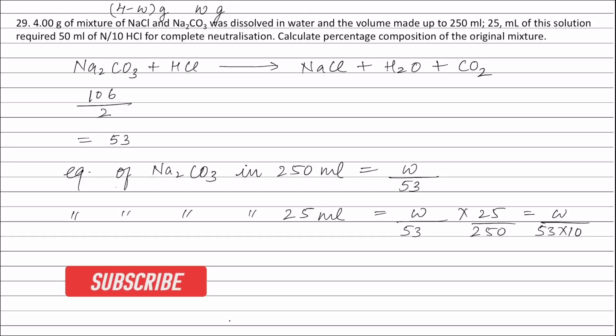Equivalents of sodium carbonate in 25 milliliters equals equivalents of HCl. Therefore, W by 53 times 10 equals equivalents of HCl, which is normality 1 by 10 times volume 50 divided by 1000 liters.